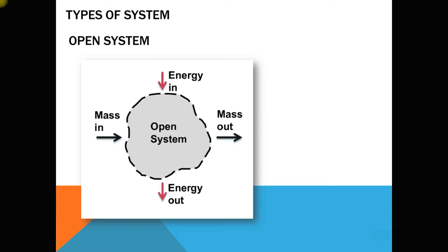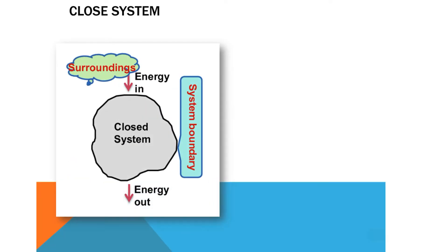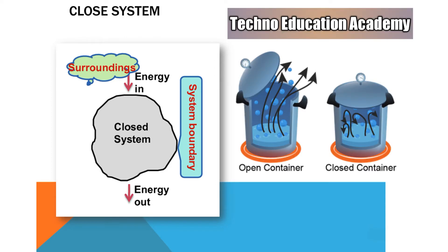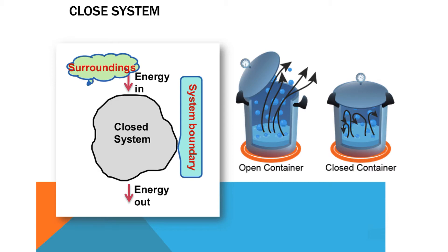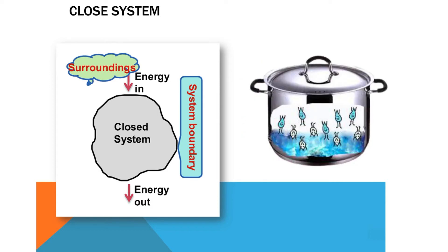The next one is the closed system. We consider the same vessel example, except that now the vessel is closed at the top. So there is no transfer of mass. When we supply heat energy, it is stored as internal energy — there is heat transfer to the system but no transfer of mass.